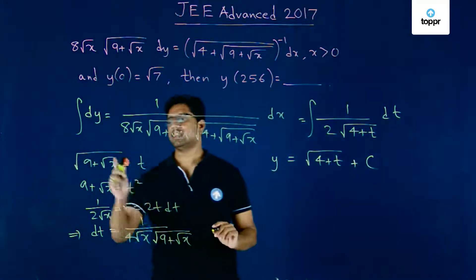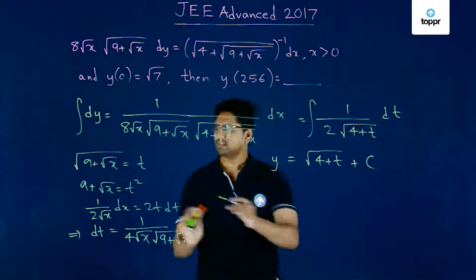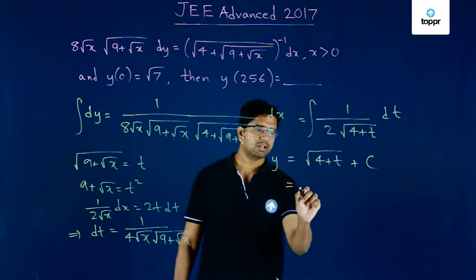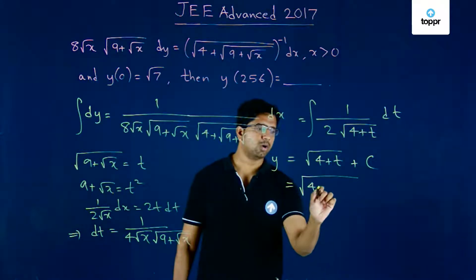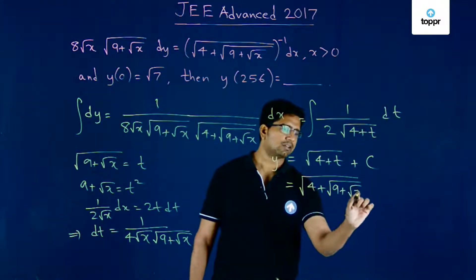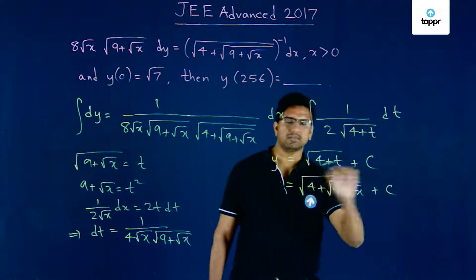To avoid confusion, let us write everything in terms of x. So we have y equals square root of 4 plus root 9 plus root x, plus c.